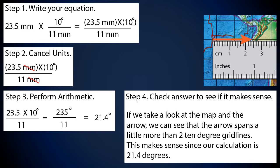Here are the steps. Step 1: write your equation — 23.5 millimeters times the conversion factor 10 degrees per 11 millimeters. Step 2: cancel the units — millimeters in the numerator and denominator cancel out. Step 3: perform the arithmetic. 23.5 times 10 is 235; 235 divided by 11 is 21.4 degrees. Step 4: check the answer. Looking at the map, the arrow spans a little more than two 10-degree grid lines, which makes sense since our calculation is 21.4 degrees.